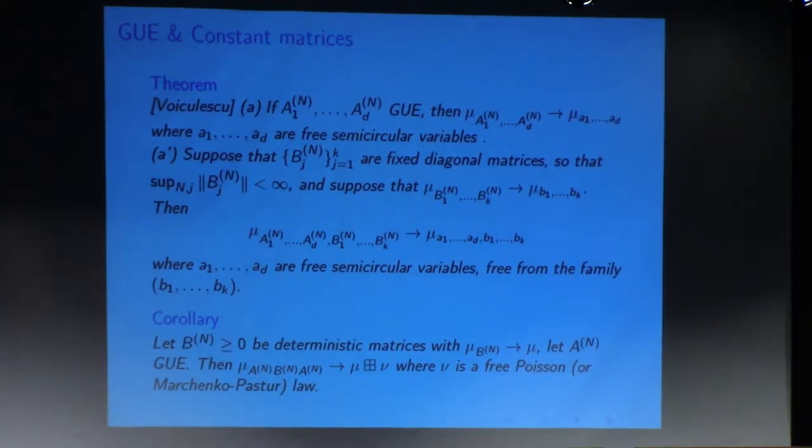Now this theorem actually has an upgrade. Namely, I can throw in deterministic matrices. So let's say that I throw in these fixed B_JN. These are deterministic, and I wrote them to be diagonal. Actually, it's not necessary. And suppose that the Bs jointly converge to some limit, then also you have the joint law of these things, so your GUE matrices and these guys converging to that.